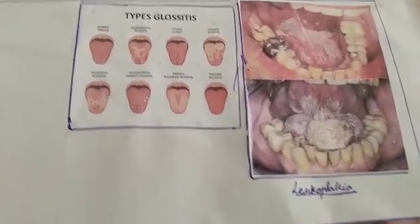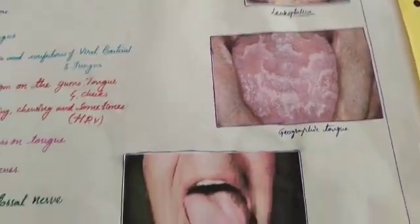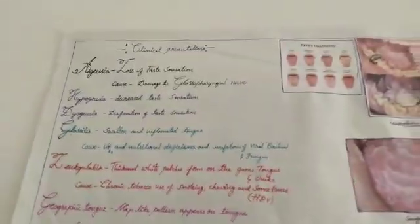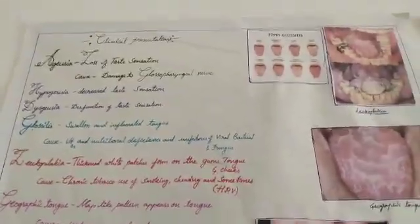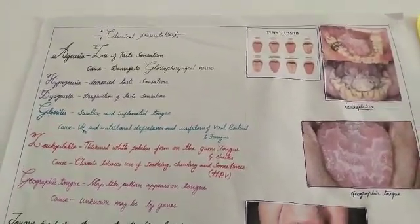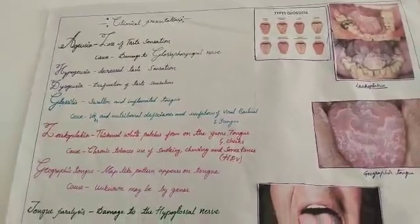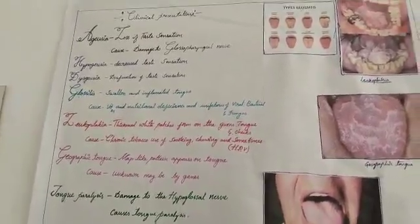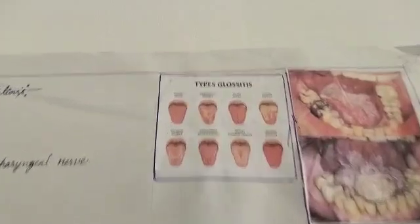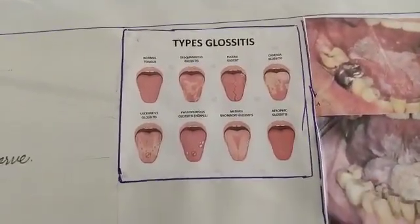In clinical anatomy, regarding taste, we can find three types of diseases. Ageusia is the loss of taste sensation, caused by damage to the glossopharyngeal nerve. Hyogeusia indicates a decrease in taste sensation, suggesting total dysfunction of taste sensation.